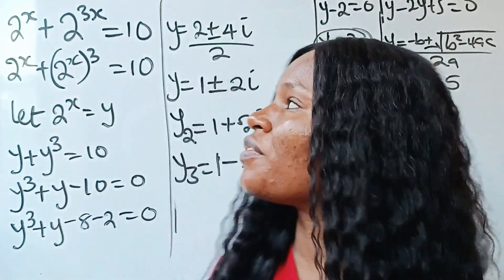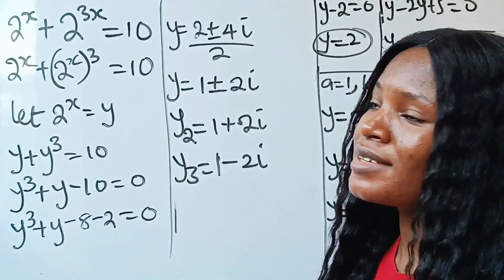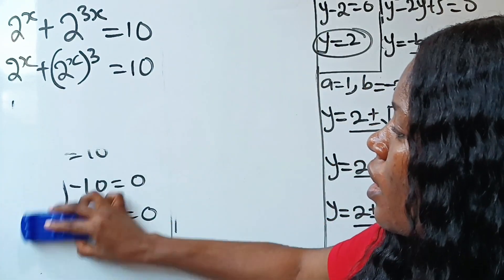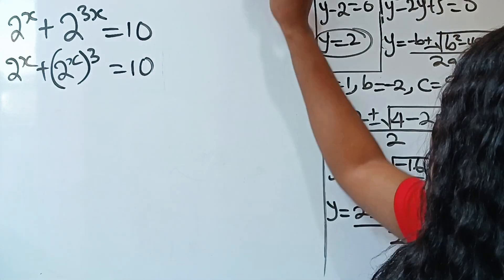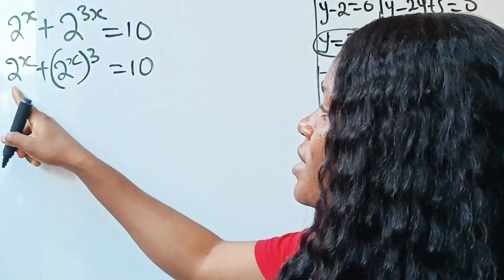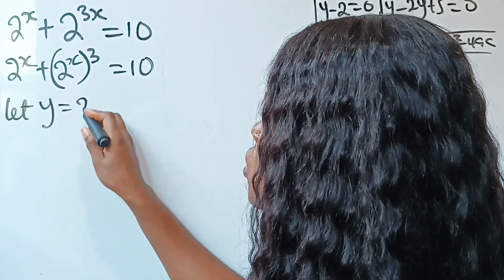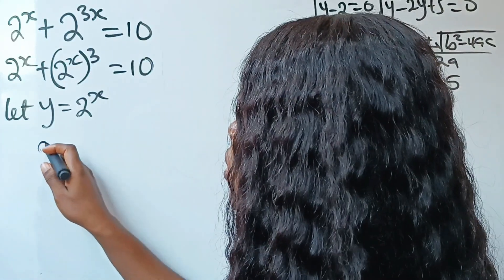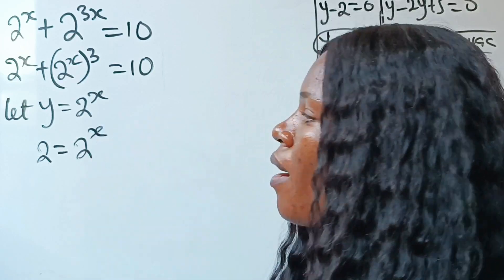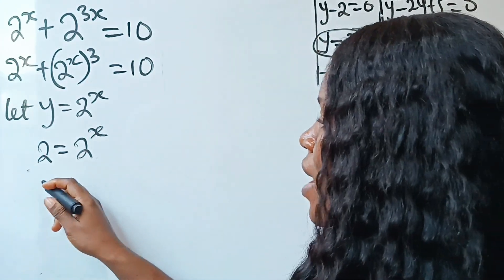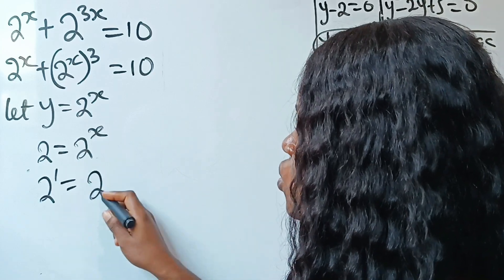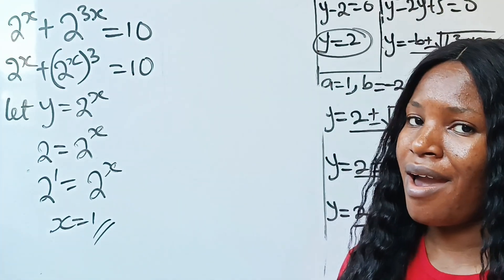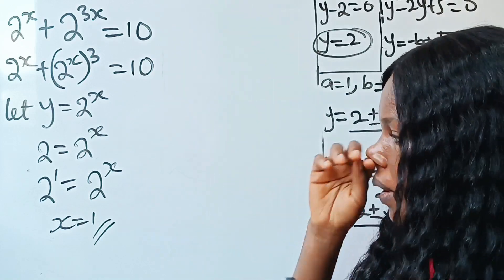Now let's substitute back into the main equation. The real value we got is y equals 2. Recall we said y equals 2 to the power of x, so 2 equals 2 to the power of x. We can write this as 2 to the power of 1 equals 2 to the power of x, so by comparison, x equals 1. This is the real value of x.